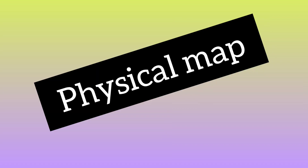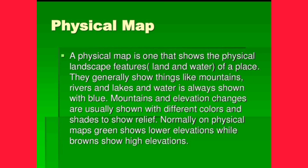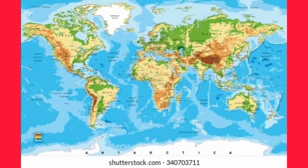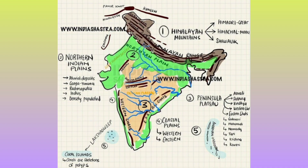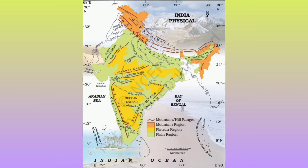First we'll discuss about the physical map. A map which gives us information about the physical features of a land — meaning mountains, rivers, lakes, and all remaining water bodies — is called a physical map.